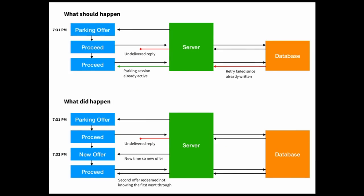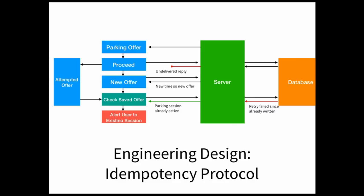No matter how much you test, you will always have bugs when you go to production. Here's an example: the same car parked in the same parking lot, starting one minute after the other, running concurrently. Sometimes the network is poor — a person starts a parking session, loses the reply, and tries again. Normally we detect it's a duplicate and say 'don't worry, you already have a session.' But in this case, because the minute ticked over from 31 to 32 between the failure and the retry, the new attempt was not detected as a duplicate and we created a parallel parking session. That's obviously bad. We had to augment our idempotency protocol to handle this check.